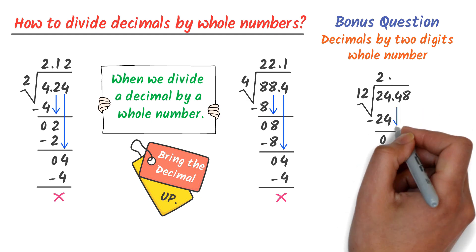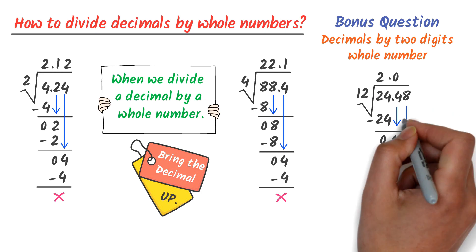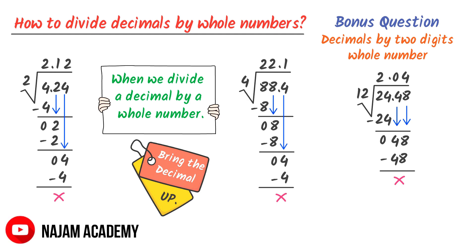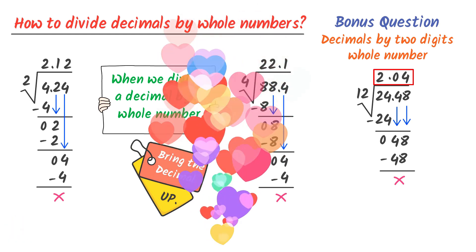Now I bring down this 4 here. We can see that 4 is smaller than 12, so I put 0 here and I also bring down this 8 here. Now 12 times 4 is equal to 48, thus 48 minus 48 is equal to 0. Therefore, when we divide 24.48 by 12, we get 2.04. So the answer is 2.04.